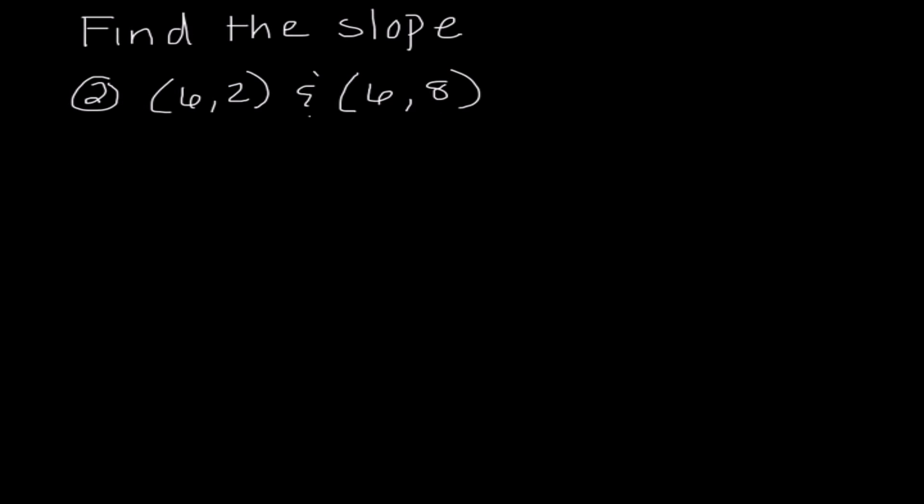Our second problem is very similar. This time our ordered pairs are 6, 2, and 6, 8. So I'm going to go ahead and write out our equation here, our formula. Now, you guys don't have to write that every time. As soon as you have that memorized, you're fine. I also labeled all of the numbers in our ordered pairs. So I'm going to substitute in and go 2 minus 8 over 6 minus 6. So I get negative 6 over 0.